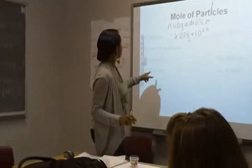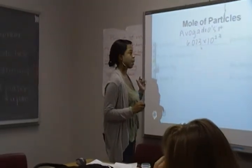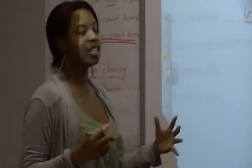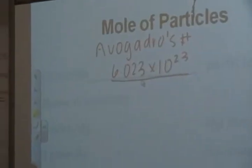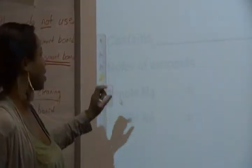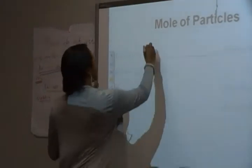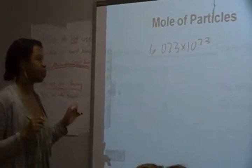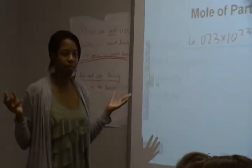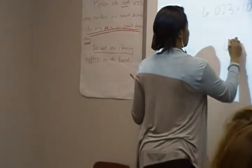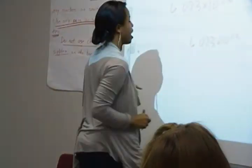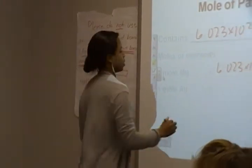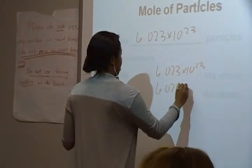Looking at our periodic tables again, what would be 1 mole of magnesium? How many atoms would that be? Particles also means atoms or molecules. So if 1 mole is equal to 6.023 times 10 to the 23rd particles, how many atoms of magnesium would you have if you have 1 mole of magnesium? 6.023 times 10 to the 23rd atoms. And if you have 1 mole of gold, how many atoms would you have? 6.023 times 10 to the 23rd.